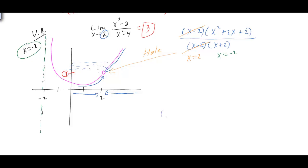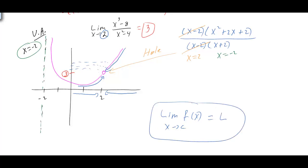The notation is: the limit of f of x as x approaches some number c is equal to L. For now we'll treat this as the informal definition of the limit — basically, what happens to our function as x gets closer and closer to c, the function approaches the limit L. In our example, L is 3 and c is 2, so the limit of this function as x approaches 2 equals 3. Keep in mind, your limit is always a y value.